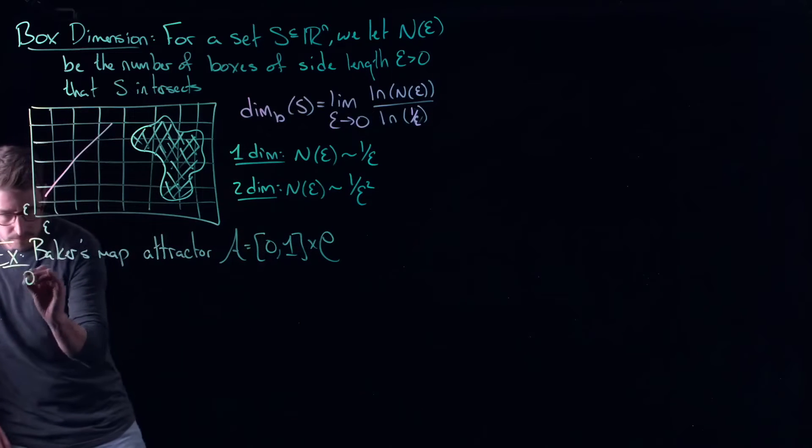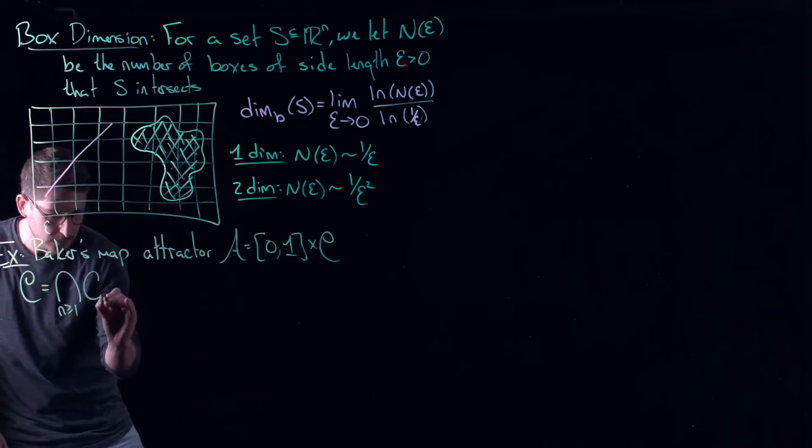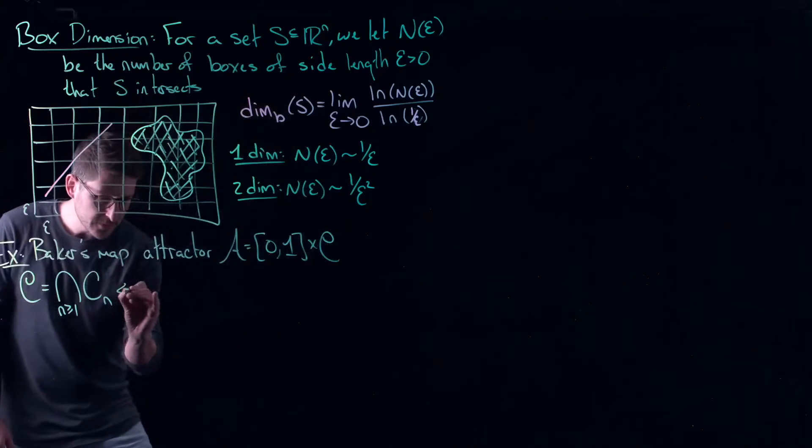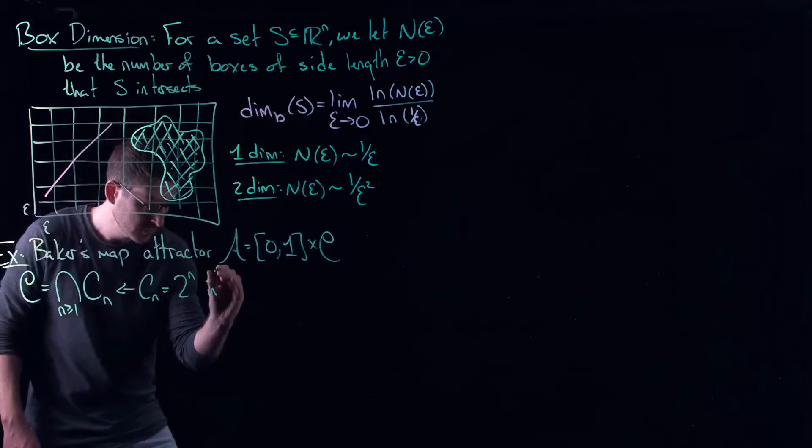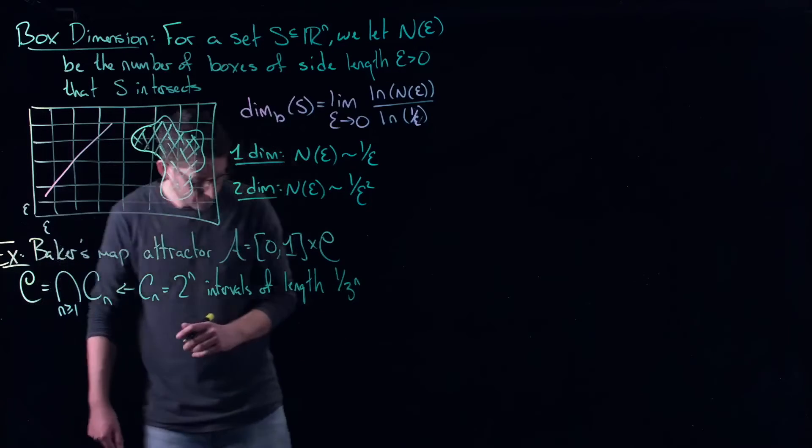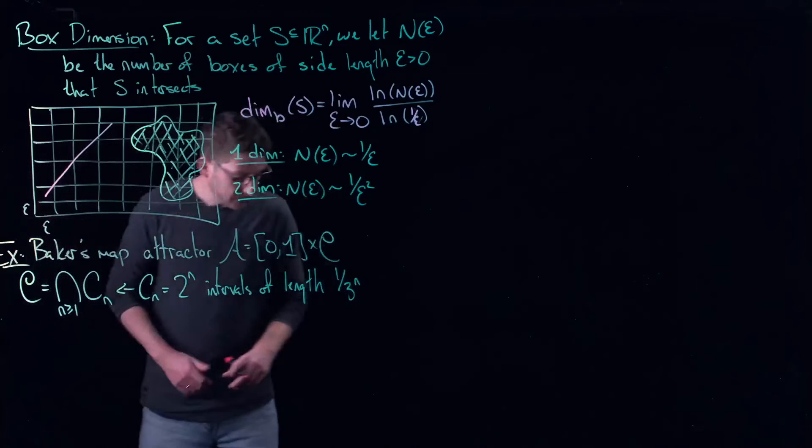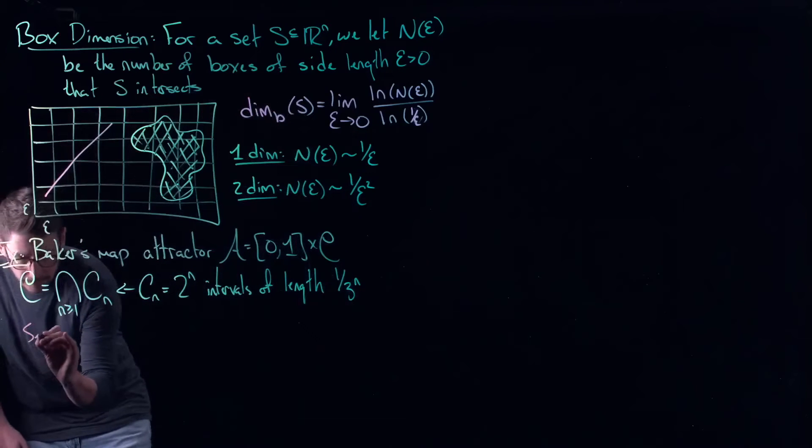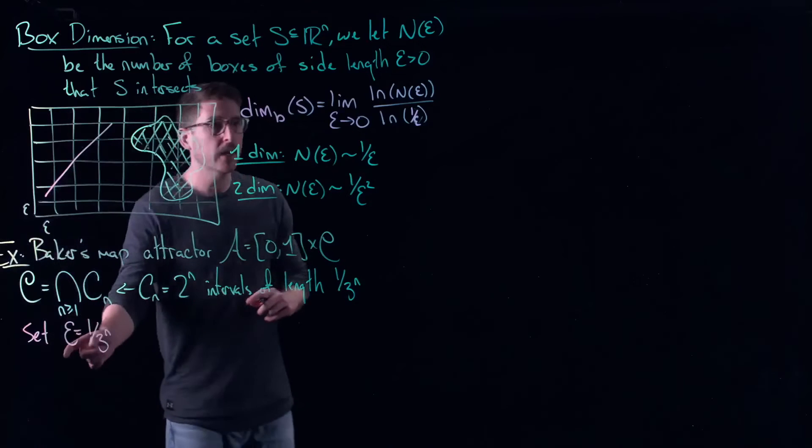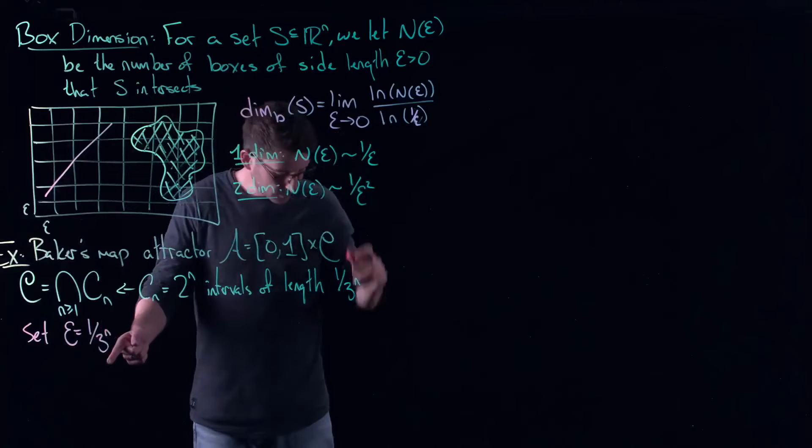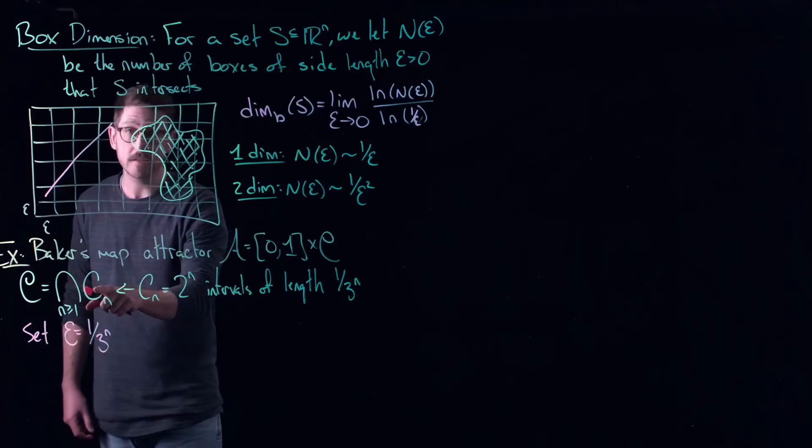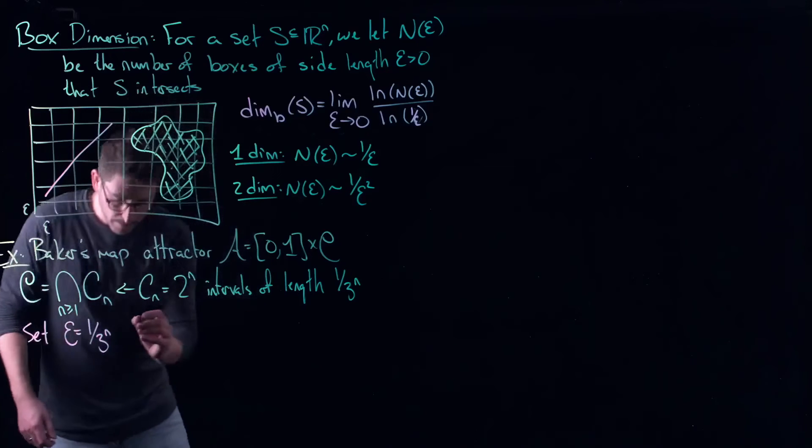Remember that C is equal to the intersection of all of these middle third sets, which I called C_n. So you might have to reference the previous video to see the iterative procedure that brought me up to these. And each C_n is equal to 2^n intervals of length one over 3^n. So essentially, if we let our ε, so let's say, again, we just want this limit to exist. So let's say, what if ε was one over 3^n, again, we want ε to go to zero, one over 3^n goes to zero. But that means that the number of intervals of length one over 3^n that I need to cover each C_n is 2^n.